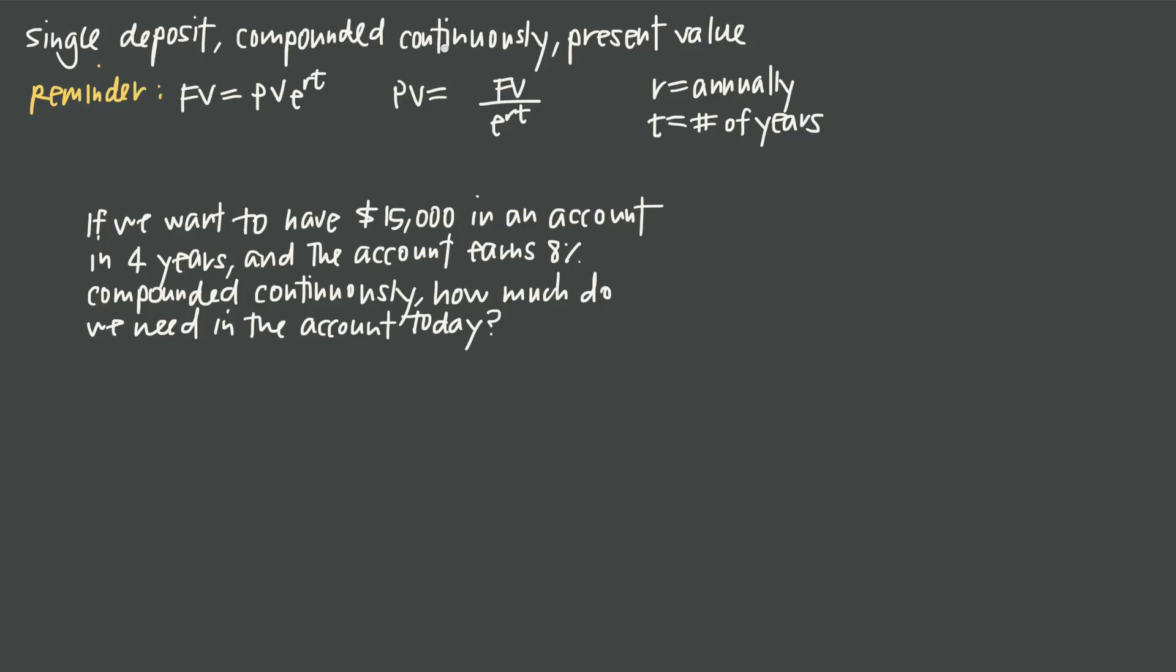And compounded continuously means that the interest we're earning on that account is being constantly compounded. And whenever you see compounded continuously or continuously compounded interest, that means that our formulas are going to include this exponential number e.